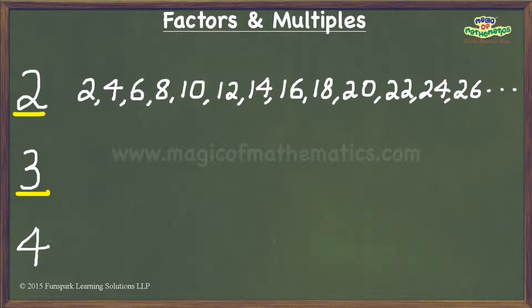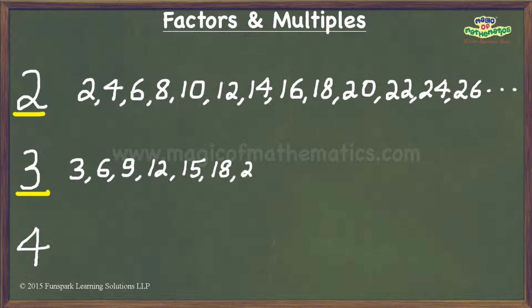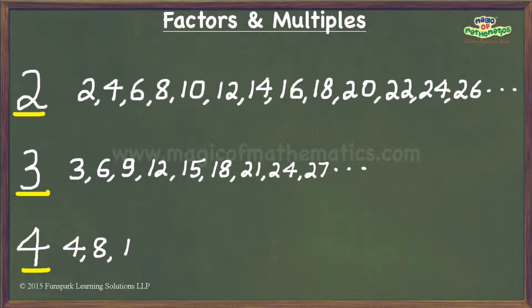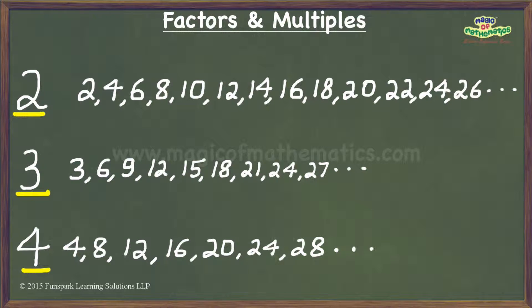For the number 3, the first few non-zero multiples are 3, 6, 9, 12, 15, 18, 21, 24, 27 and so on. And for the number 4, the first few non-zero multiples are 4, 8, 12, 16, 20, 24, 28 and so on.